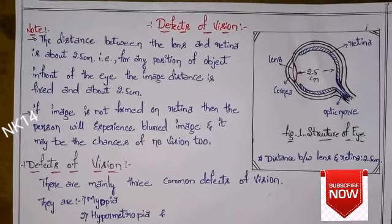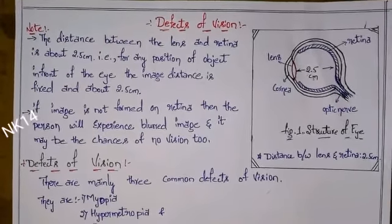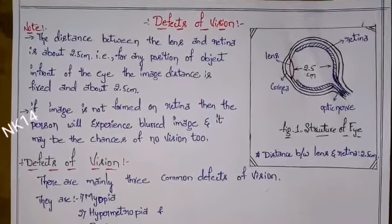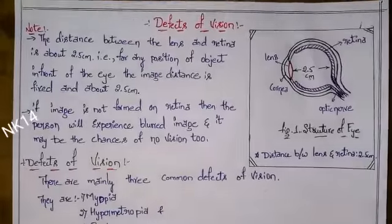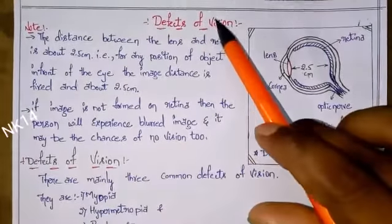In my previous video I have already explained about the structure of the human eye. Now let's see defects of vision.